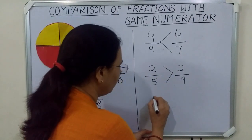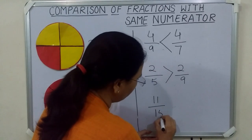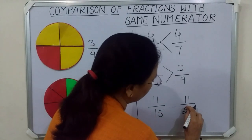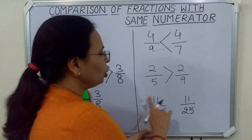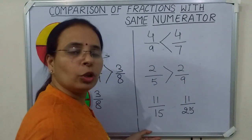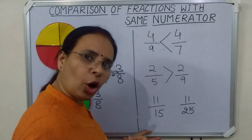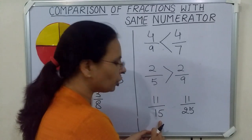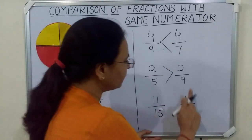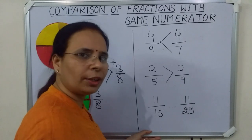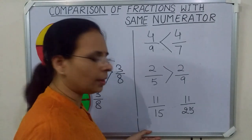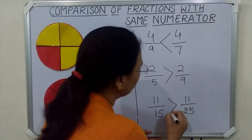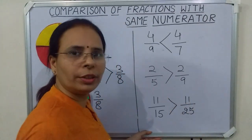Children, one more example: eleven upon fifteen and eleven upon twenty-five. Again, you can see the numerators are same, so what will we do? We will compare the denominators. In the first fraction, the denominator is fifteen; in the second fraction, the denominator is twenty-five. So which fraction is greater? Eleven upon fifteen is greater than eleven upon twenty-five.